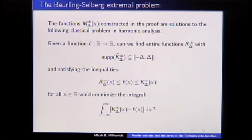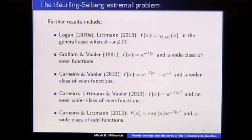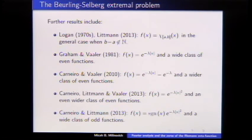This problem has a long history — in signal processing, many electrical engineers worked on it. Back in the 70s it was studied by Selberg and signal processing people, then Graham and Vaaler picked it up in the 1980s, and more recently Emmanuel Carnero, Frederick Lippmann, and Jeff Vaaler revisited these problems. Most of the work was on even functions until very recently, when Carnero and Lippmann treated an odd function, which is exactly what we needed for S(t). So the theory wasn't really in place until recently to do this.